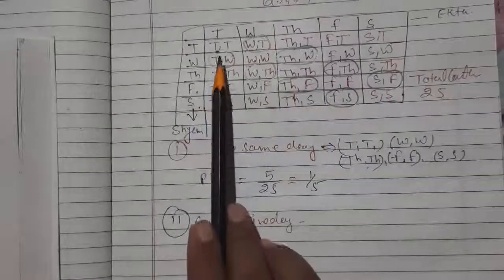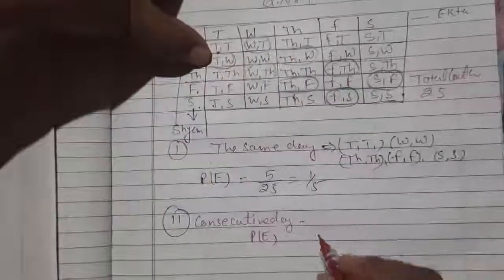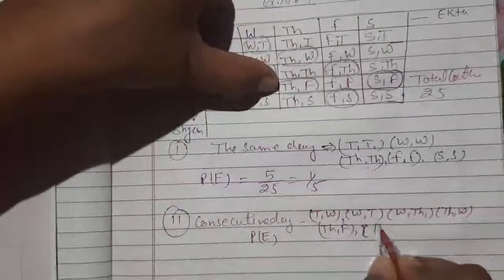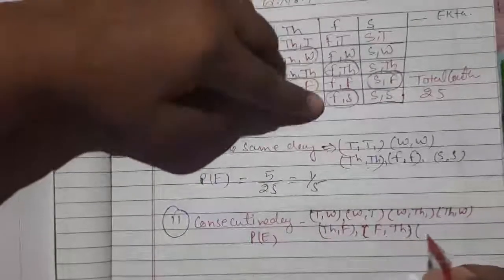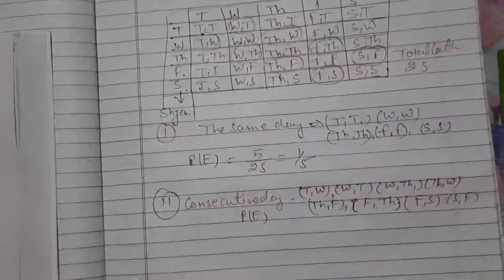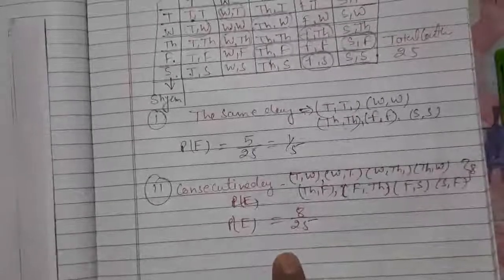Counting the consecutive day pairs: Tuesday-Wednesday, Wednesday-Tuesday, Wednesday-Thursday, Thursday-Wednesday, Thursday-Friday, Friday-Thursday, Friday-Saturday, Saturday-Friday — that gives us 8 favorable outcomes. Total outcomes are 25. So the probability for consecutive days is 8/25.